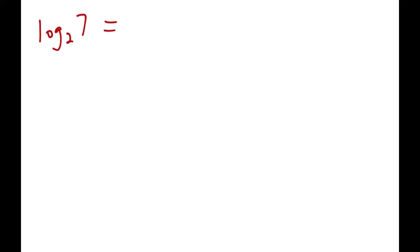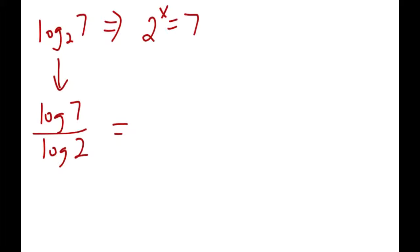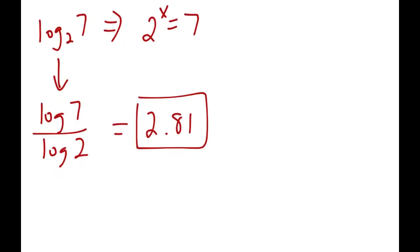Let's do a couple more examples. If I gave you log base 2 of 7 — we could write that as 2 to the power of what equals 7, but we still can't change the bases, so that doesn't help. Our better solution is to leave it in log form and solve it as log 7 divided by log 2. Type that in on your calculator: log 7 divided by log 2 gives an answer of 2.81 if we round off the decimal. Quite often it's easier to use logs to solve rather than exponents.